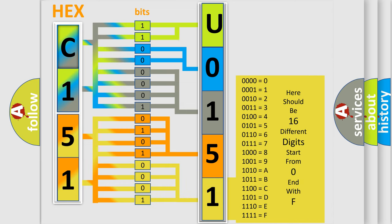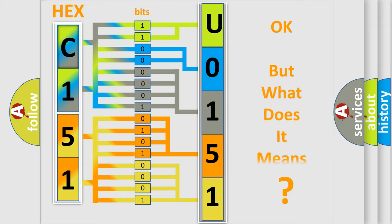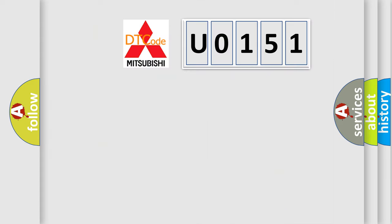We now know in what way the diagnostic tool translates the received information into a more comprehensible format. The number itself does not make sense if we cannot assign information about what it actually expresses. So, what does the Diagnostic Trouble Code U0151 interpret specifically for Mitsubishi car manufacturers?